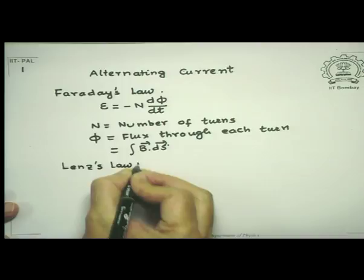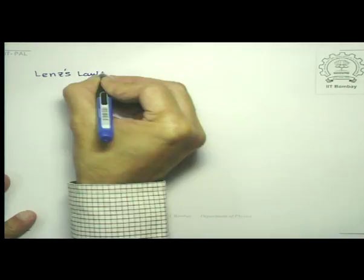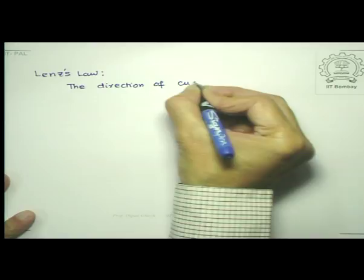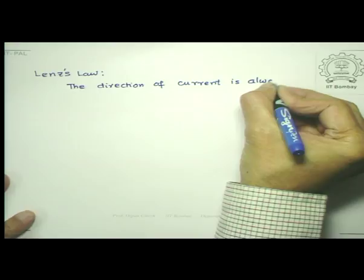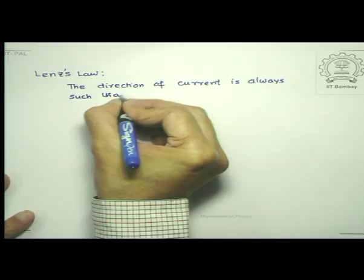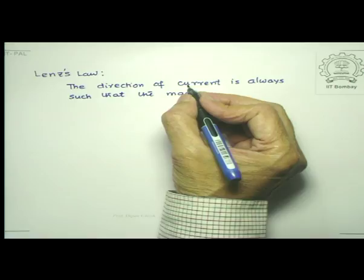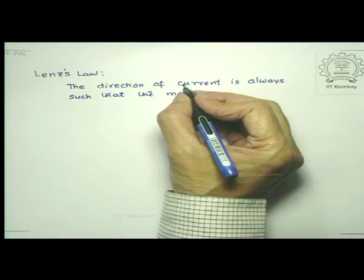Lenz's law talks about the direction of current induced in the circuit. According to Lenz's law, the direction of such induced current is always such that the magnetic field that such a current produces opposes the change that produced it. In other words, it tends to negate whatever change was being brought about by the agency producing this current.